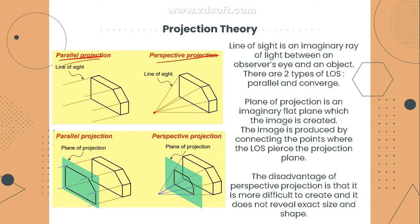The plane of projection is the imaginary flat plane on which the image is created. The image is produced by connecting the points where the line of sight pierces the projection plane. After projecting the line of sight, when we connect those projections, we form the plane of projection. In parallel projection, we can get the exact size and shape of the object that we are projecting — one face of the object is projected exactly the same.